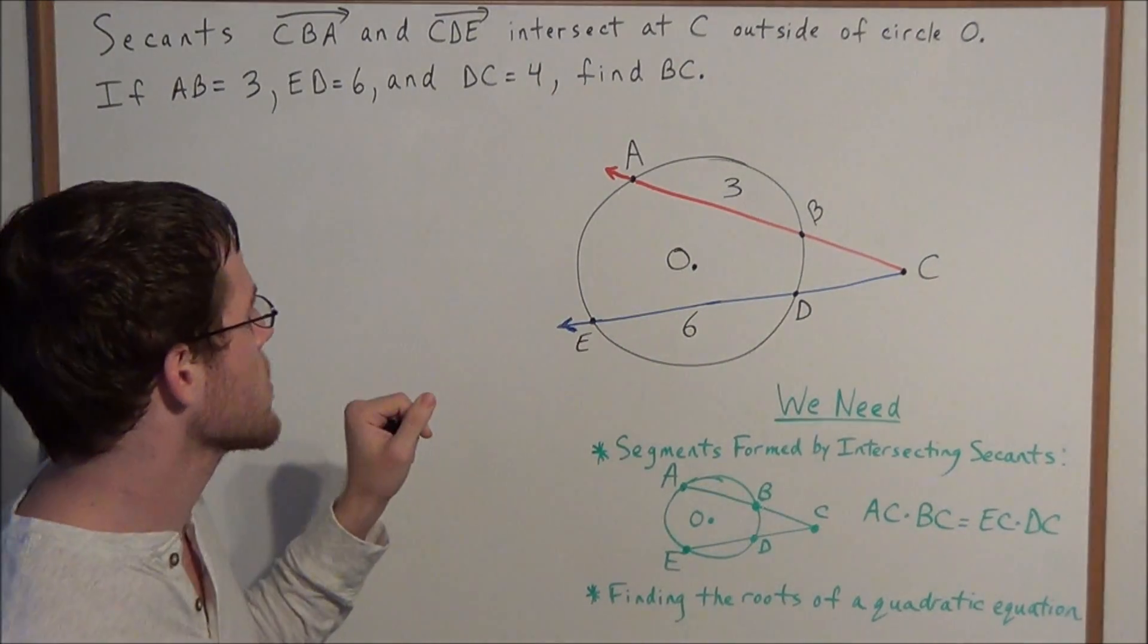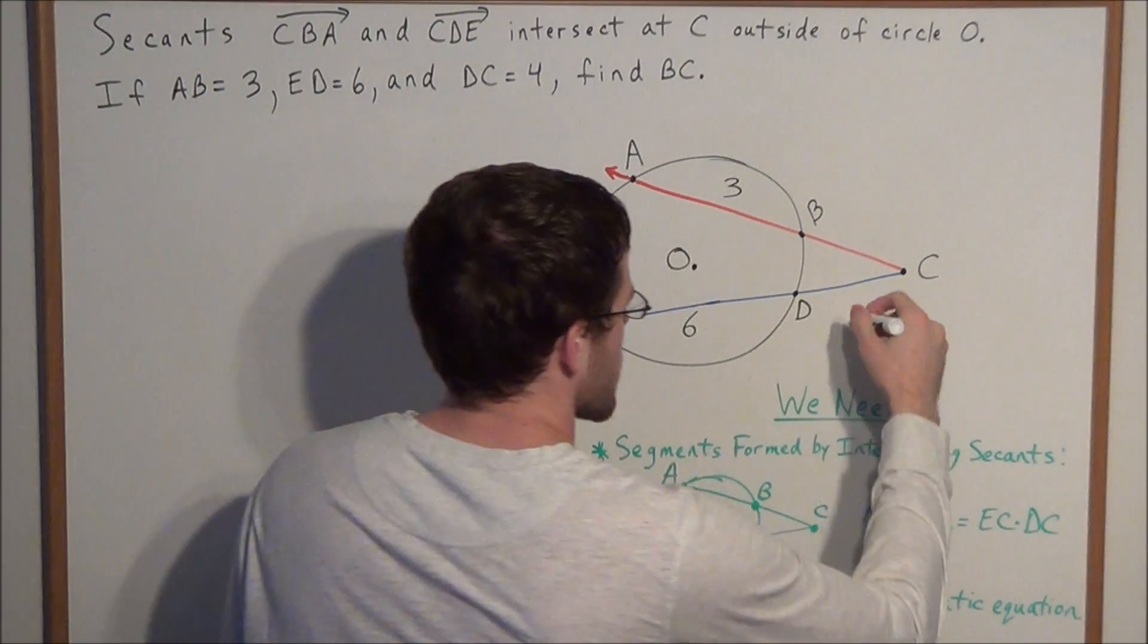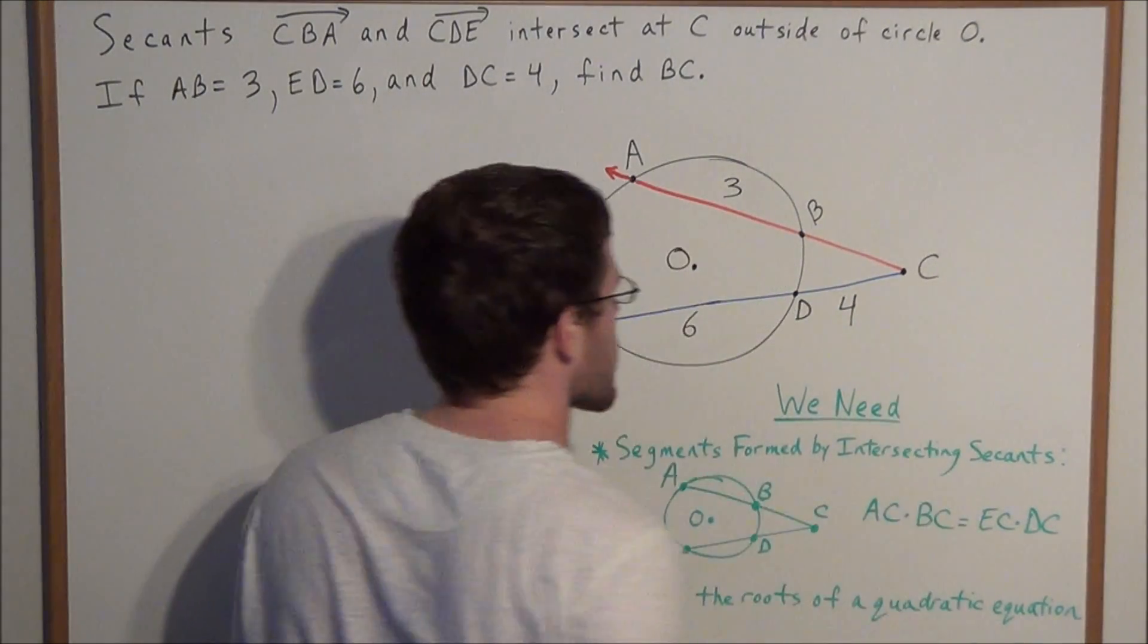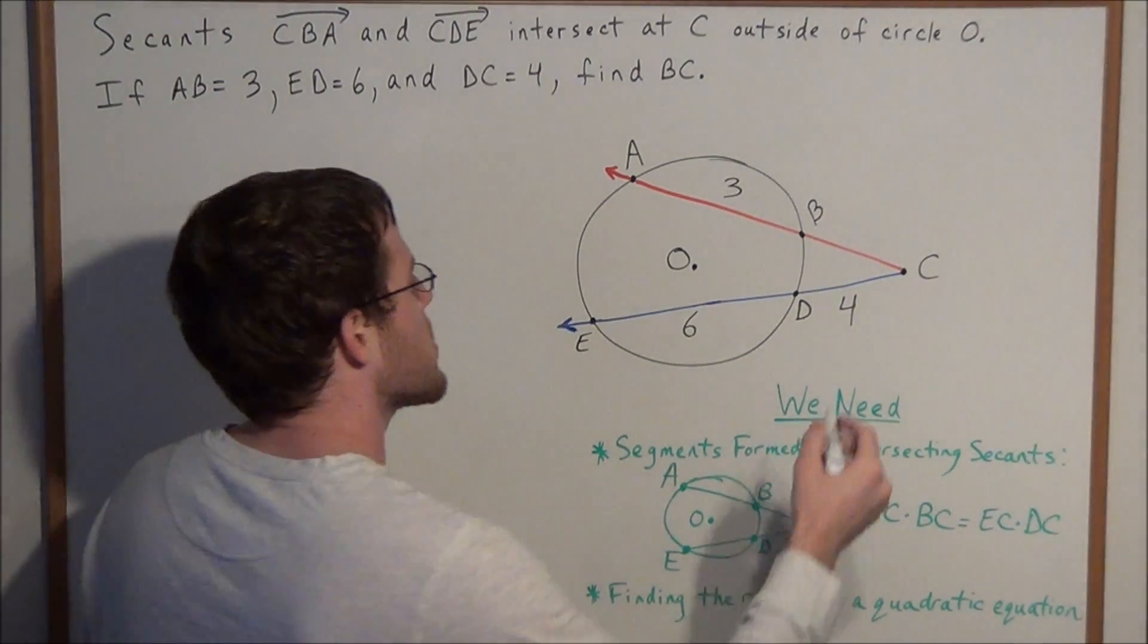And finally, we were given that the length of line segment DC is equal to 4, so we can label this line segment 4. Now the goal is to find the length of line segment BC, and we don't know the length of that line segment yet, so we can just call it X.